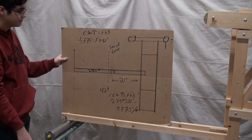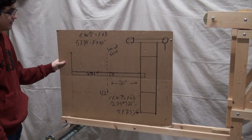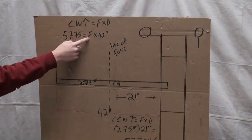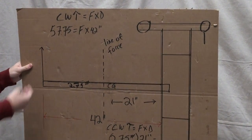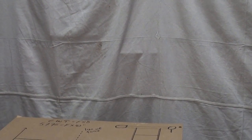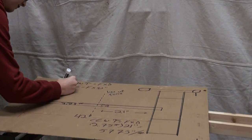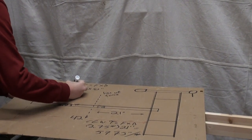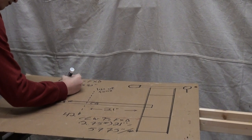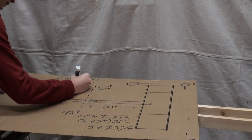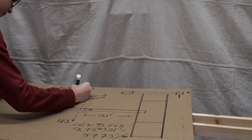So we have the torque, we have the distance, all we want to find out is the force. Just some easy algebra. Divide both sides by 42. And doing that, we get force equal to 1.375 pounds.